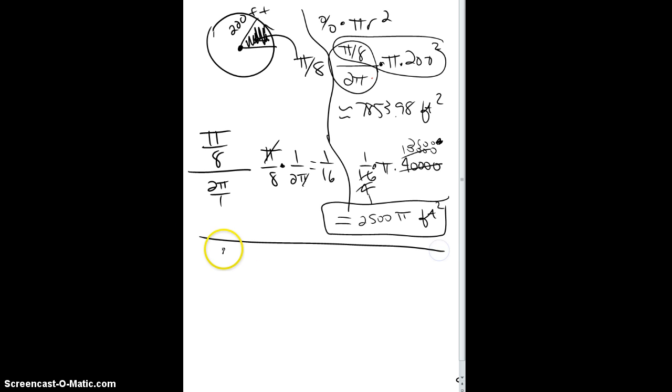If you're a formula person, that is okay. You can always use the formula, which is theta times r squared over 2 gives you the area of the sector. This time it's nice because I gave you radians, and the radius is still 200, and this is still 2. So this is pi over 8 times 40,000, and then all of that is divided by 2.